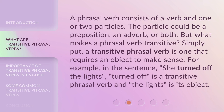A phrasal verb consists of a verb and one or two particles. The particle could be a preposition, an adverb, or both. But what makes a phrasal verb transitive? Simply put, a transitive phrasal verb is one that requires an object to make sense. For example, in the sentence 'she turned off the lights,' 'turned off' is a transitive phrasal verb and 'the lights' is its object.